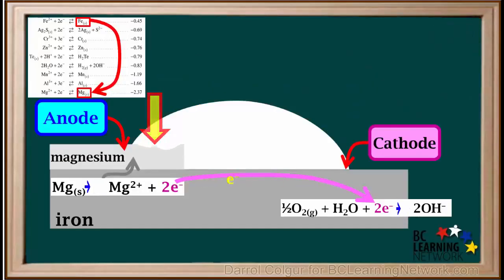For example, if magnesium is attached to iron, the magnesium gets oxidized rather than the iron, thus protecting the iron from oxidation.